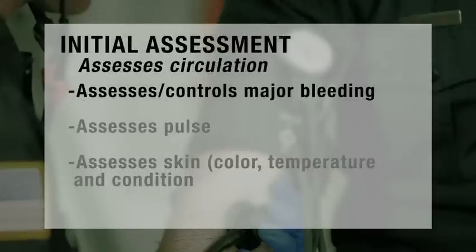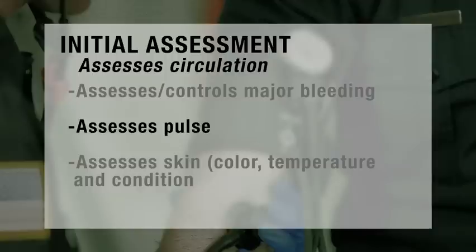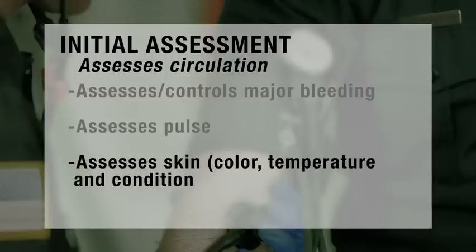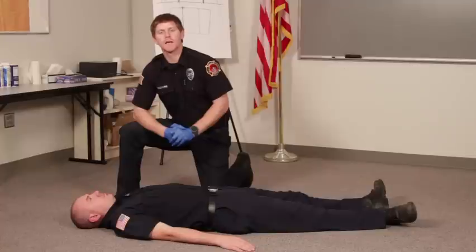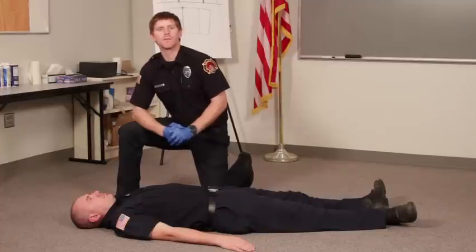Under circulation, you'll get three points for controlling any major bleeding, assessing a pulse and heart rate, and also determining the skin condition of your patient. At this time you'll tell your evaluator your needs for treatment and transportation.